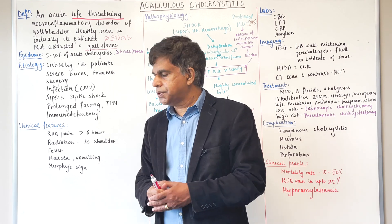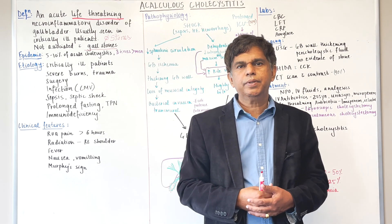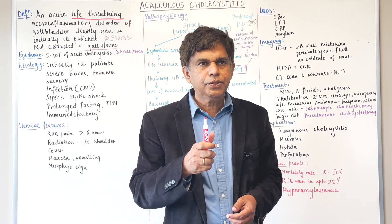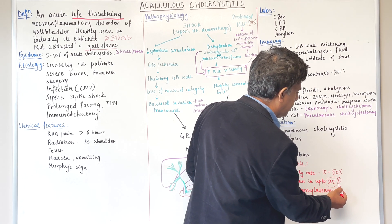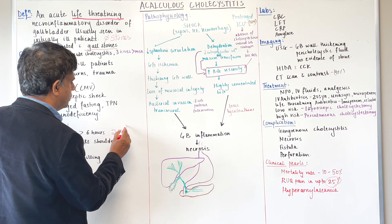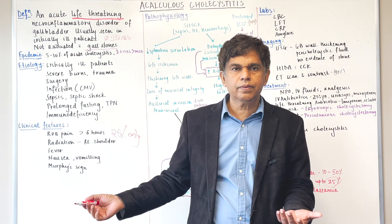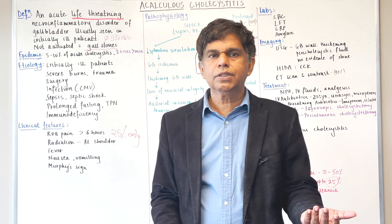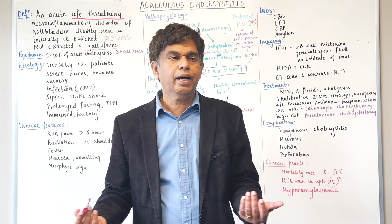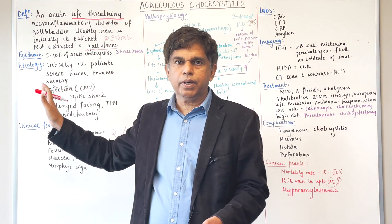What are the clinical features? While right upper quadrant pain is the hallmark of acute cholecystitis, only 25% of acalculous cholecystitis patients will have right upper quadrant pain. Remember that number. You may also see fever, nausea, vomiting, or Murphy's sign — but the problem with Murphy's sign is that most of these patients are critically ill in the ICU, possibly unconscious, and may not be able to exhibit it.